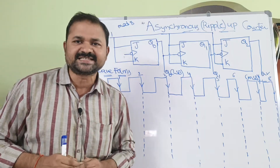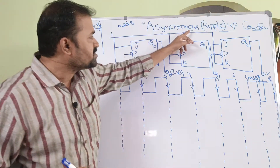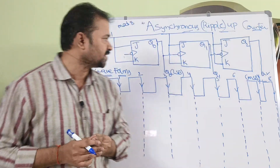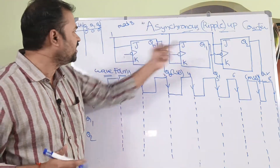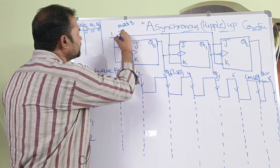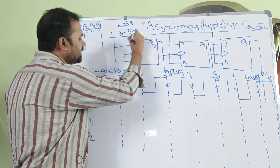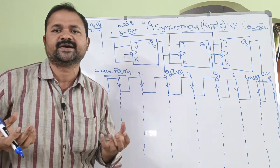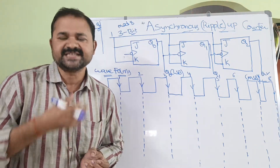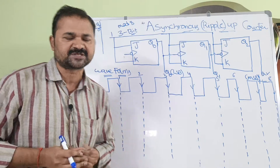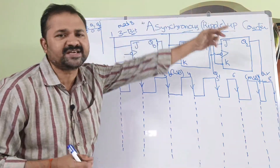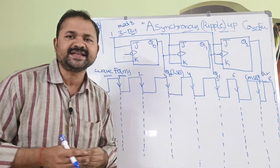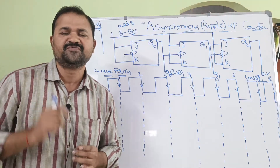Now let us discuss about asynchronous or ripple up counter. This is the diagram for a 3-bit asynchronous or ripple up counter. A counter is just like a register — it is a collection of flip-flops. So here it is a 3-bit asynchronous up counter, and we will have 3 flip-flops where each flip-flop can store 1 bit of data.